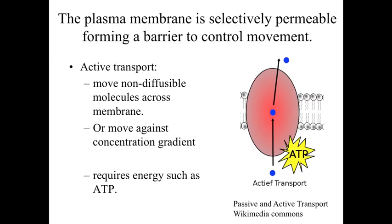The counter to that, using the selectively permeable property to control the movement of materials across the membrane, is active transport. Active transport is essentially moving molecules that are non-diffusable — so they can't diffuse through one of our tunnels — or moving them against the concentration gradient. Because of this it's more difficult, and it's going to require energy. The most common example is pumping materials across a membrane to accumulate them outside or within the cell, and moving them against their concentration gradient requires ATP energy.